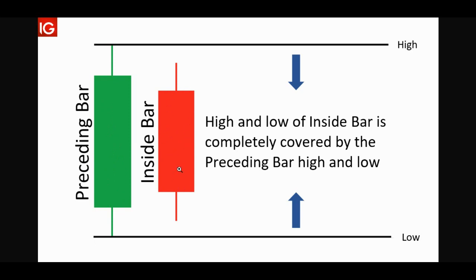Often technicians consider an inside bar to be a reversal candle — again, not 100% of the time. Imagine if you had candles going up, and then you get an inside bar, especially a red one. You might think it's going to reverse, and the next candles might start to go down. And the other way around: if you have candles going down and then get an inside bar, especially a green one, you might think it's going to go up. A lot of people will draw horizontal lines at the high and the low of the preceding bar to measure it — and I'll show you that in a moment. So that's what an inside bar, or inside candle, is.